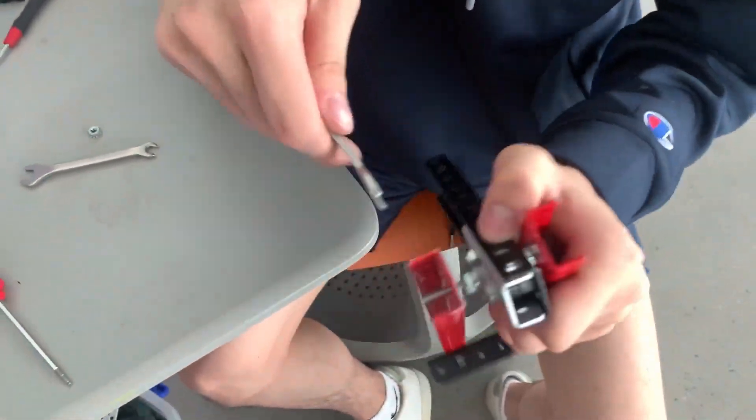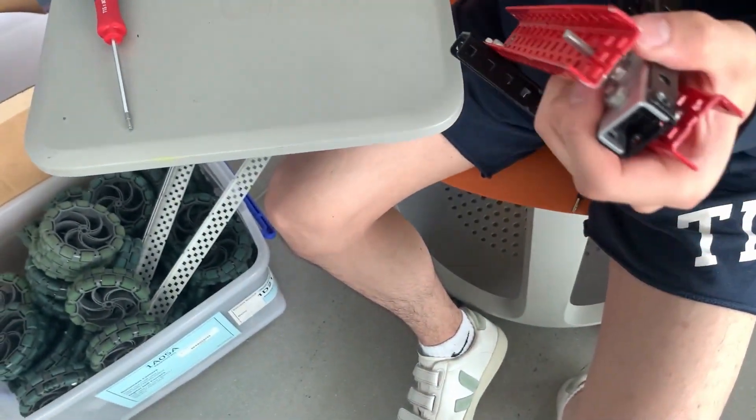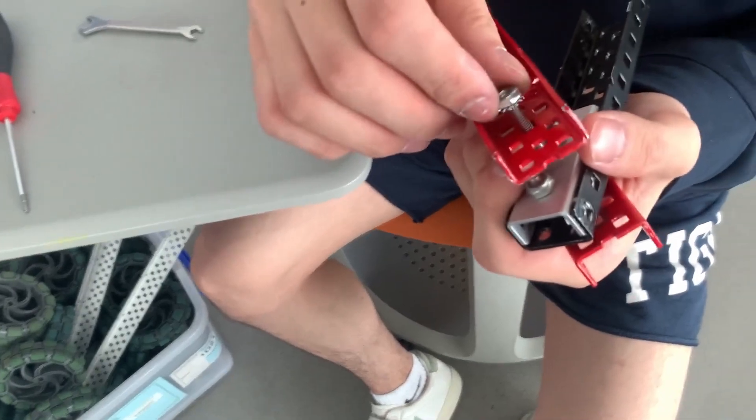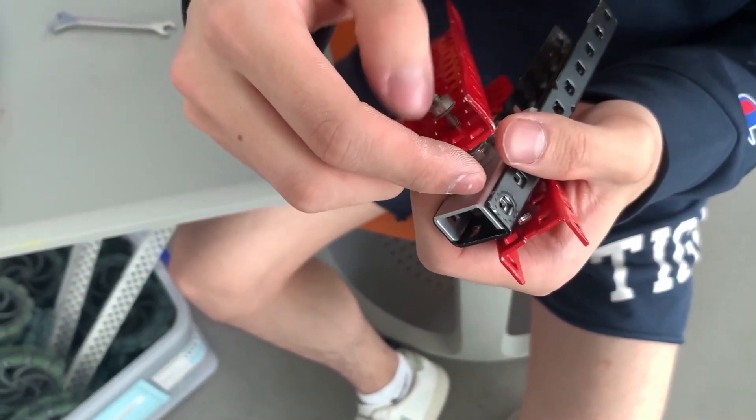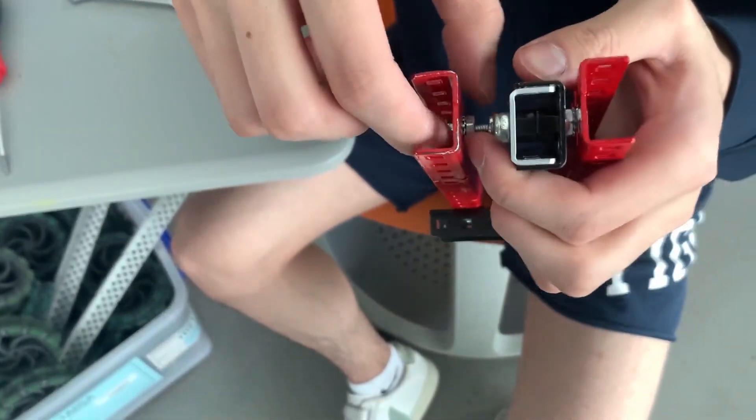Now I'll go ahead and just omit this just to be brief. But essentially, now you'll want to get another cap nut on the other side. Screw it in. And now you have basically two cap nuts that are clamping against each other.